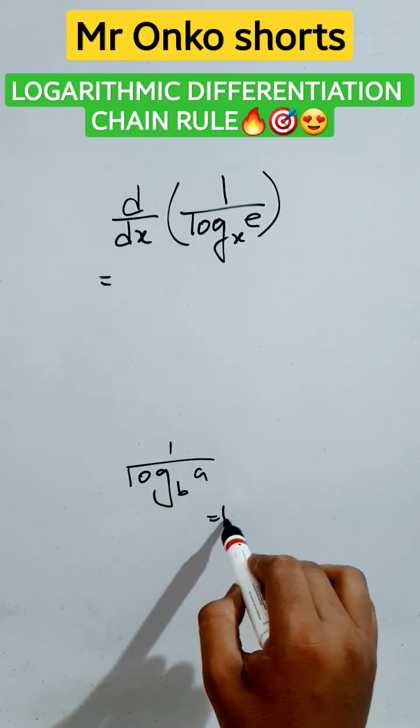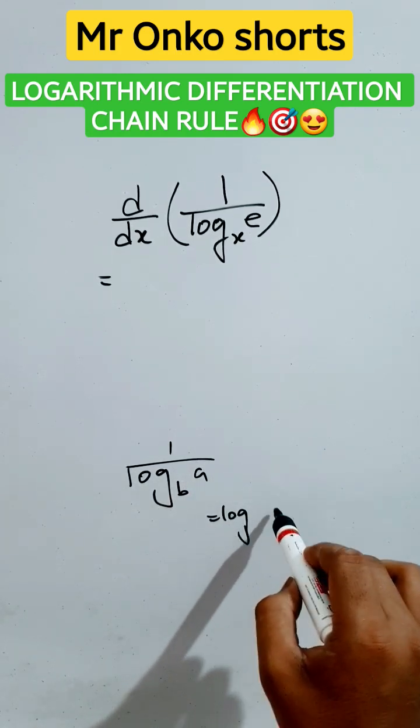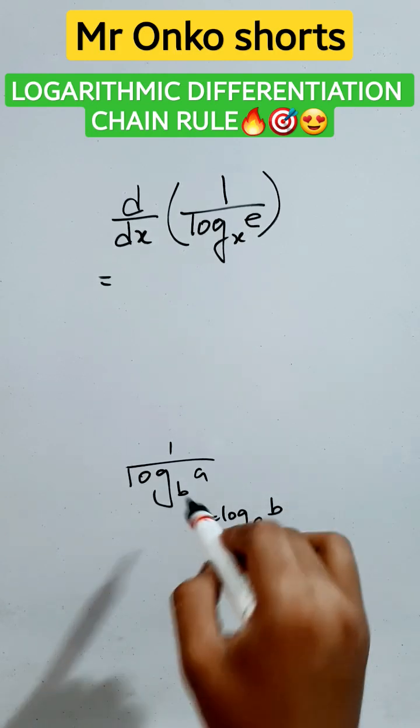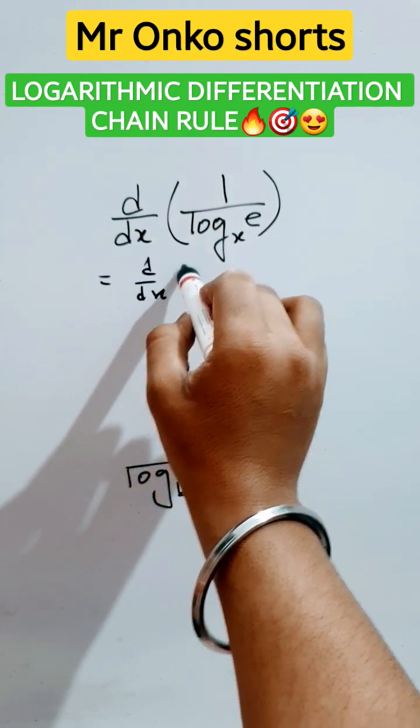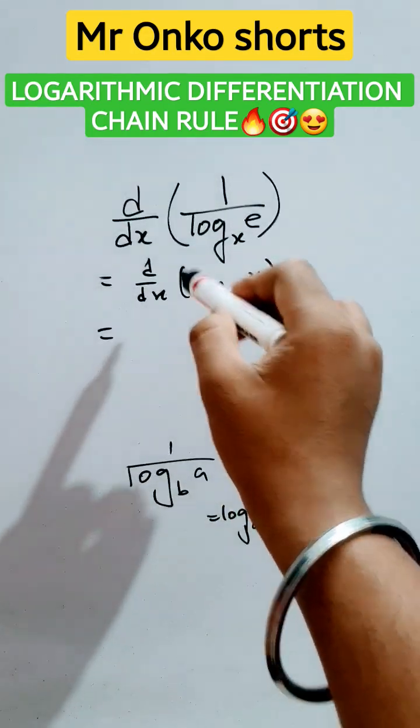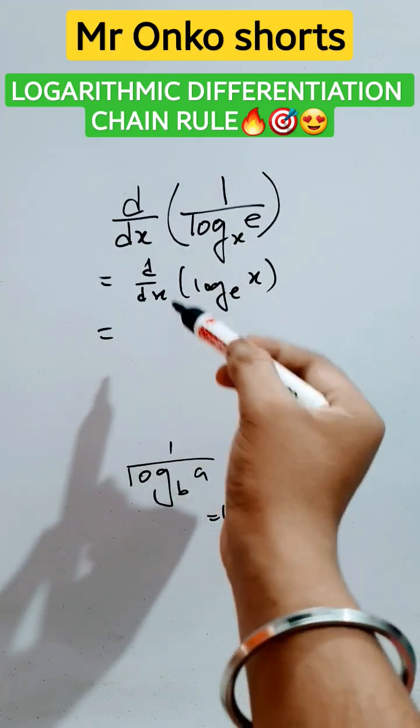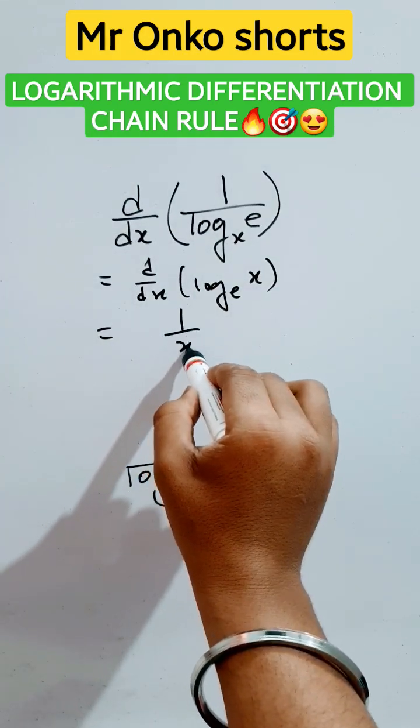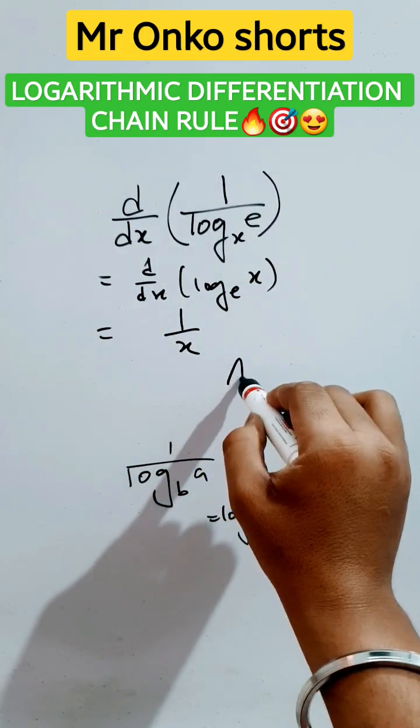So here it can be written as d/dx of logarithm of x to the base e. According to the logarithmic differentiation property, it's just a simple case: 1 by x will be the answer of the given question. Thus you can solve such differentiations.